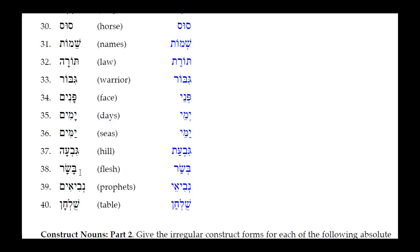Number thirty-six: Basar — for flesh/grain. Rules 1a and 1b apply: the Kamets under the Sin in the closed unaccented syllable reduces to a Patak, and the Kamets under the Beit in the open unaccented syllable reduces to a simple Sheva. Result: Besar.